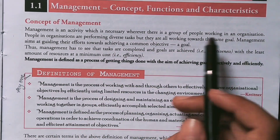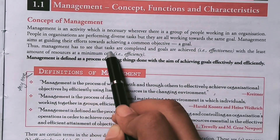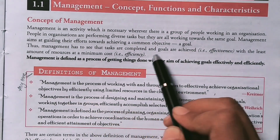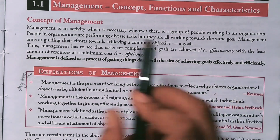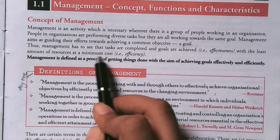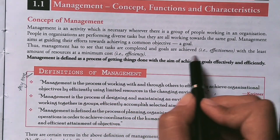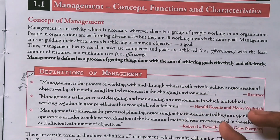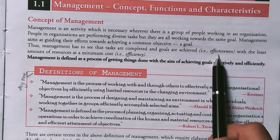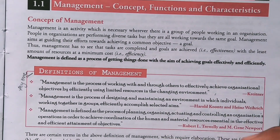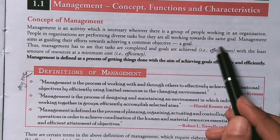Management has to see that the tasks are completed and the goals are achieved — that is effectiveness — with the least amount of resources at the minimum cost — that is efficiency. So these two words are very important: one is effectiveness and another is efficiency, and there are more questions coming from this. I want to tell you from the beginning which questions are coming.